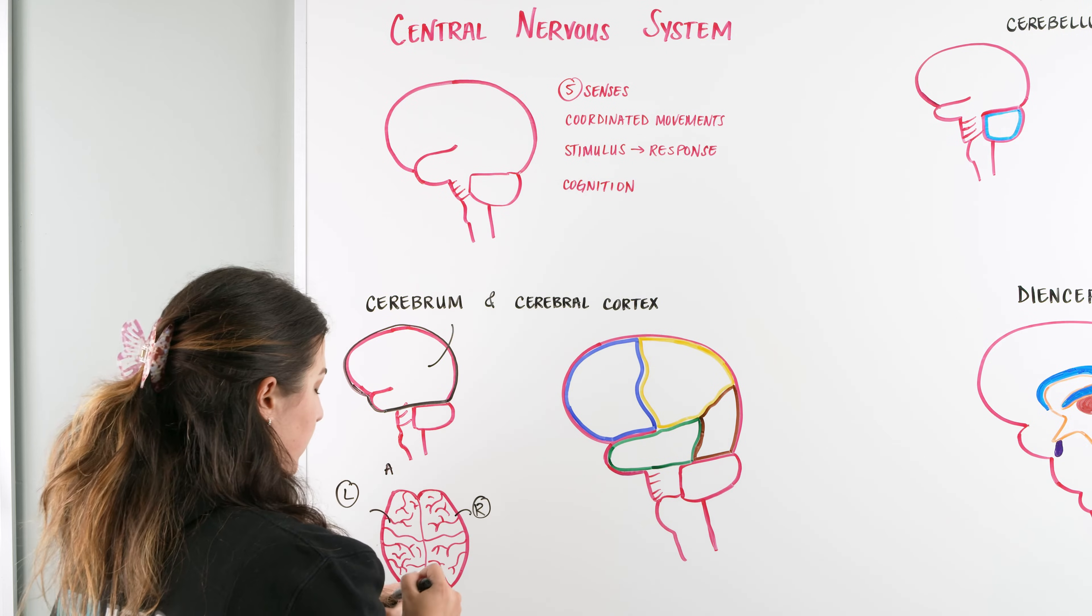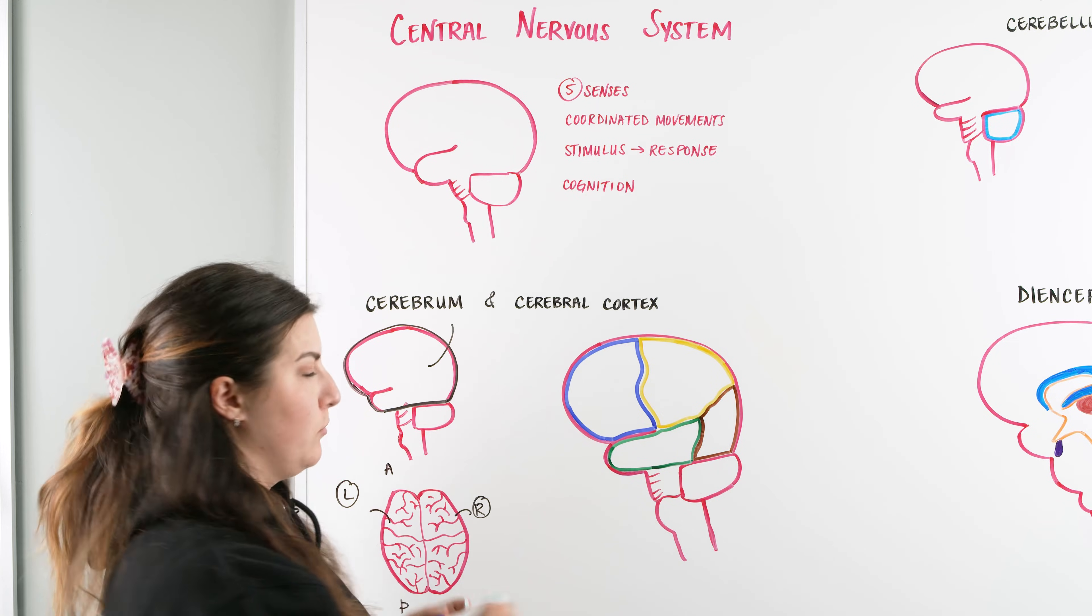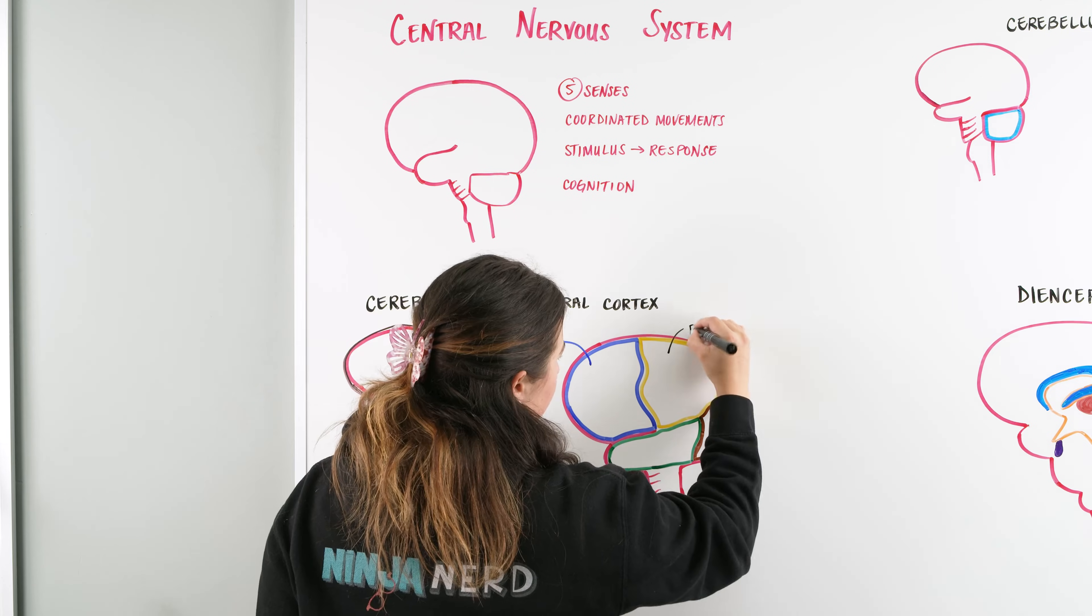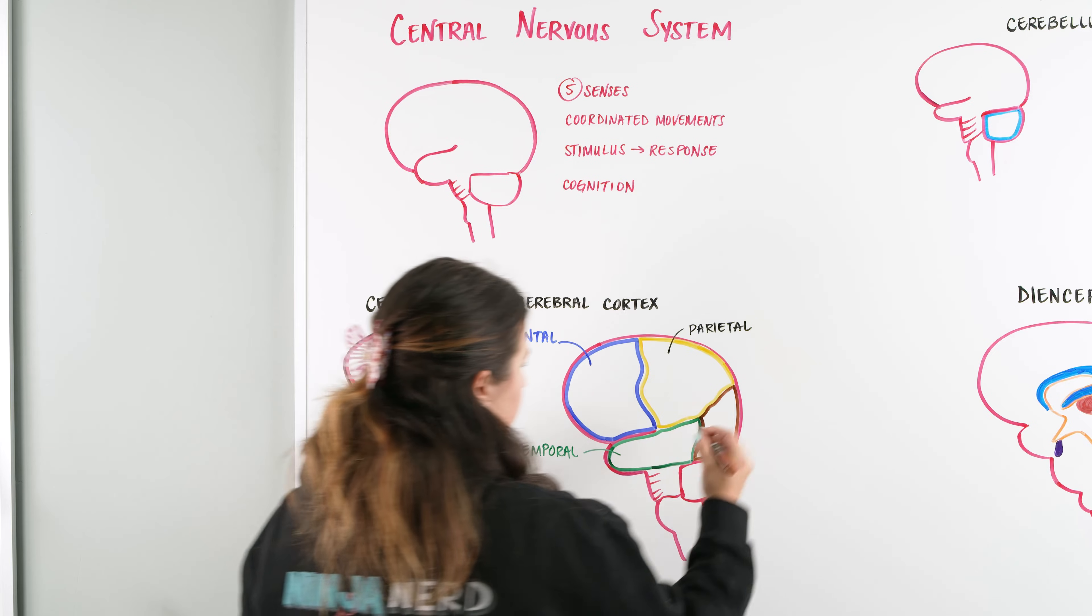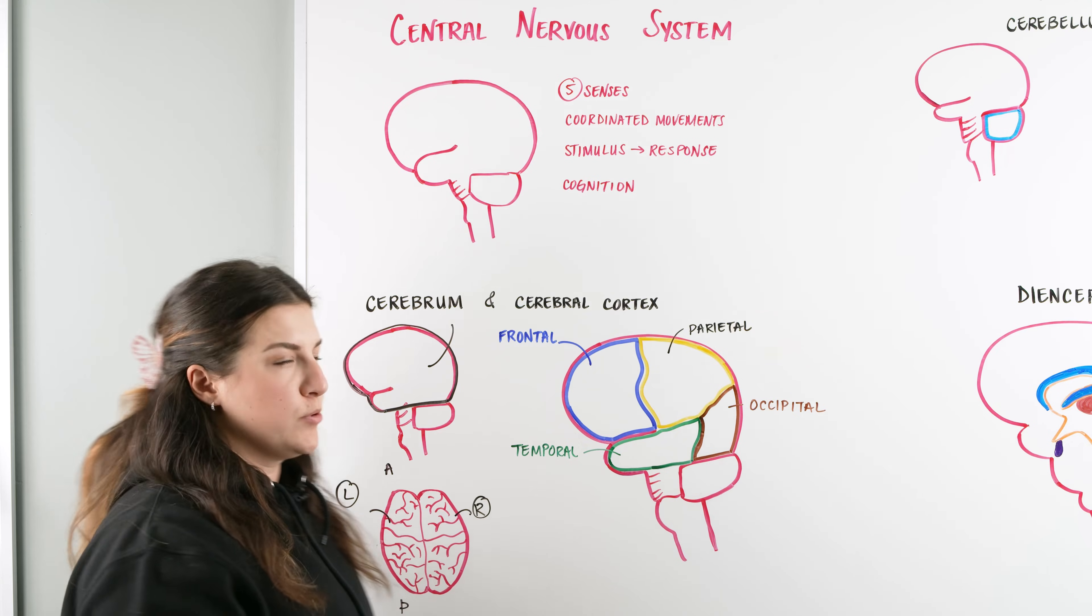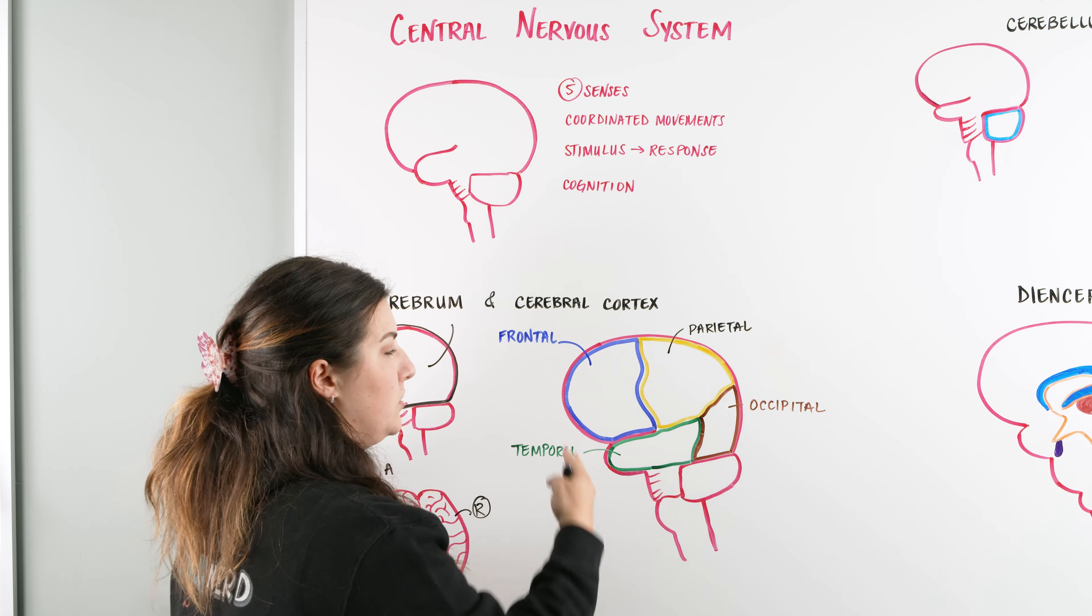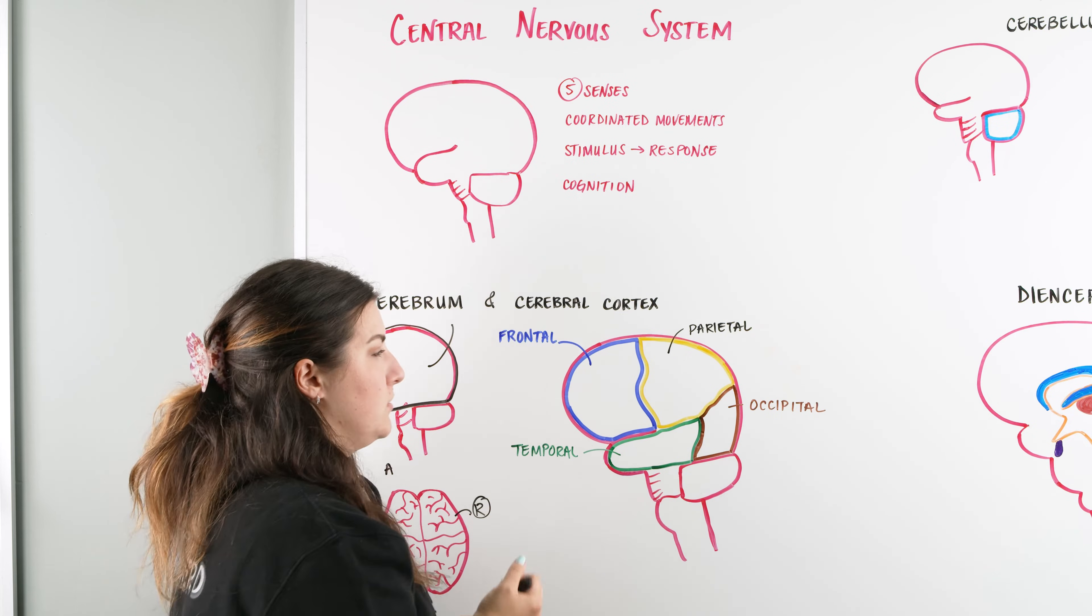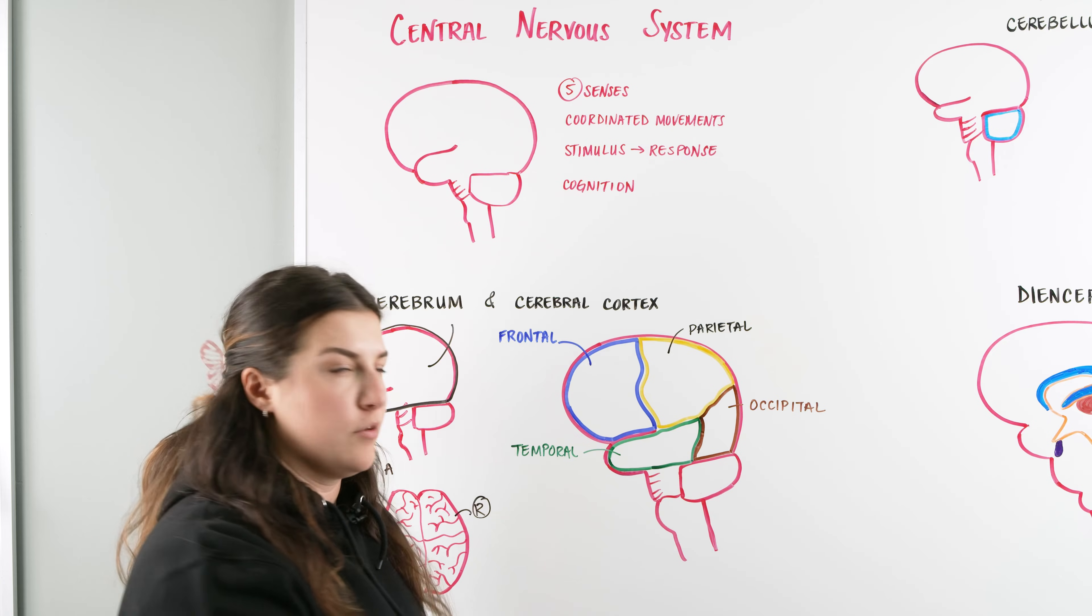The biggest part of our brain is our cerebrum, broken into our left and right hemispheres. It can also be further broken down into our cerebral cortex, which is the gray matter or the outer portion of the cerebrum. These four different lobes have different names: frontal, parietal, temporal, and occipital. Each lobe has its own predominant function, but I don't want you to think one lobe only does one function, because the brain works together to make processes occur.